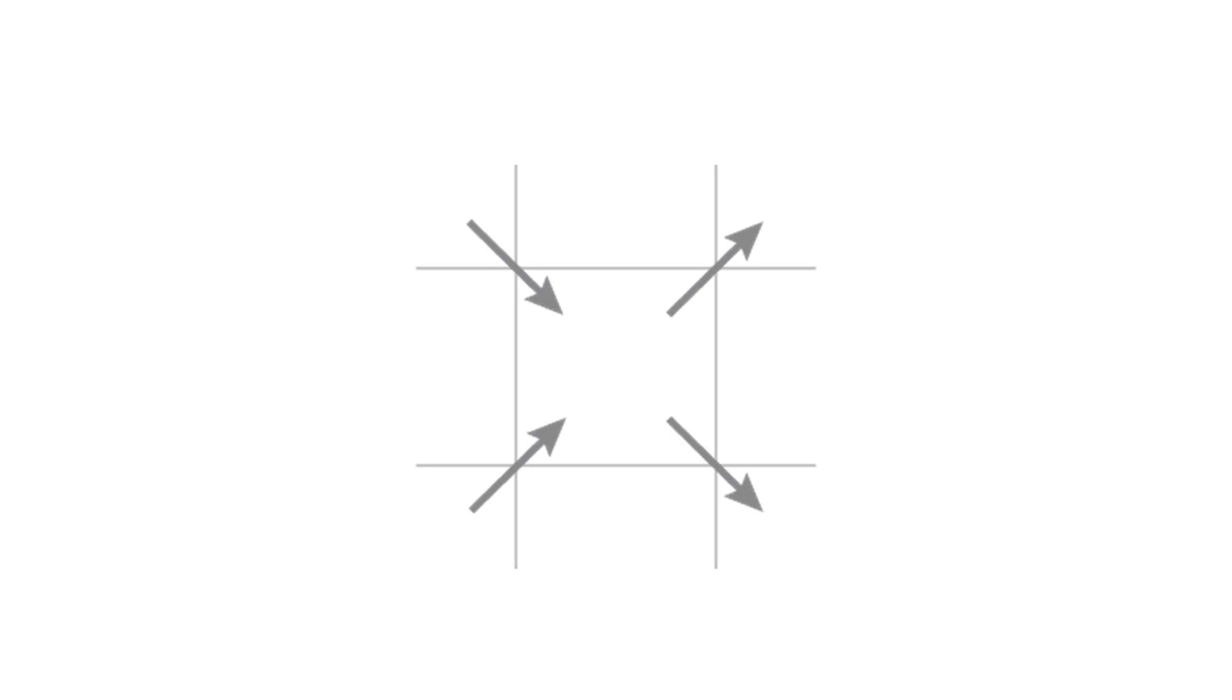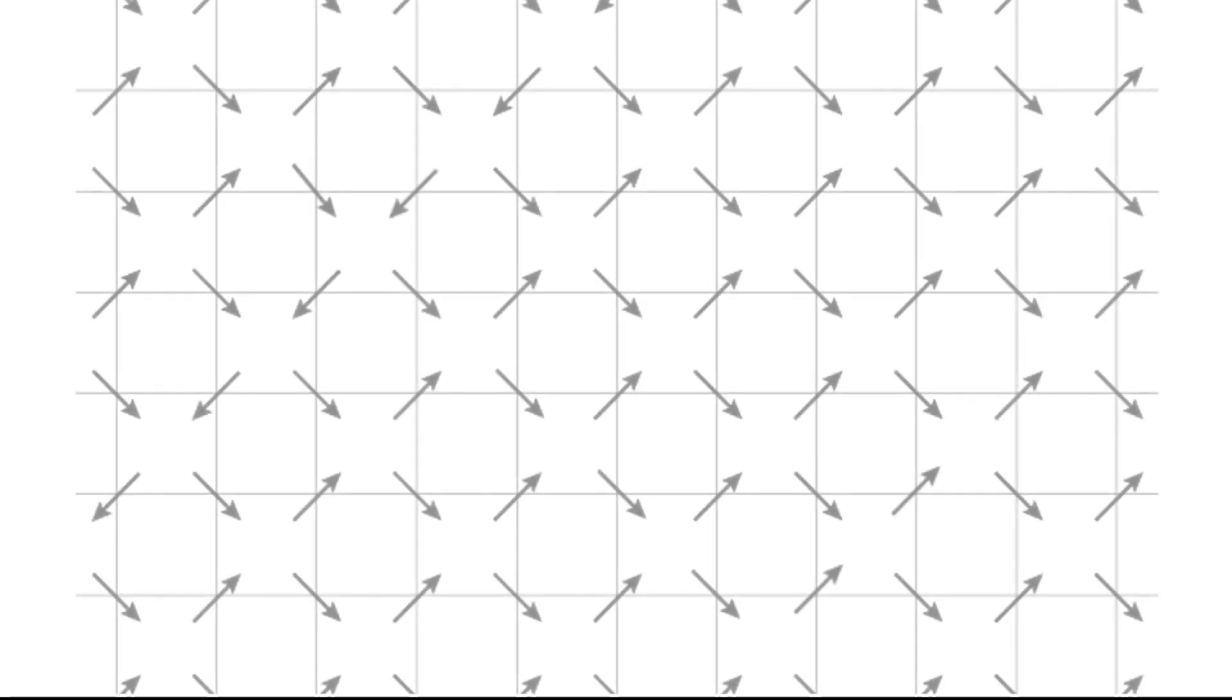But if there is enough thermal energy, an atom's spin can flip into a less favorable higher energy state. When this happens, a pair of monopoles forms, both a north and a south.